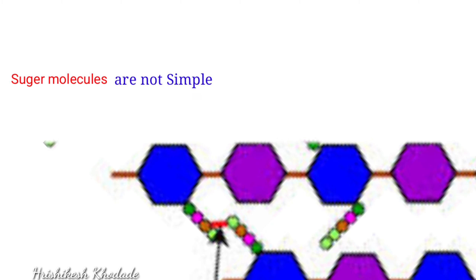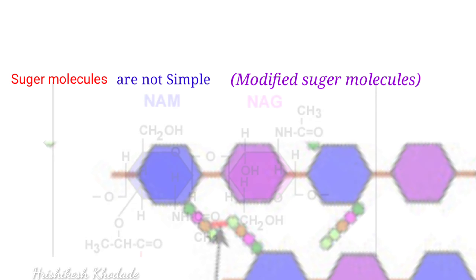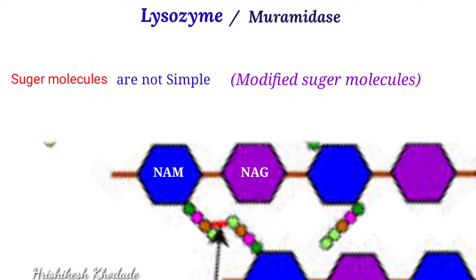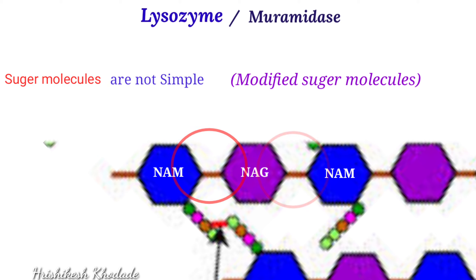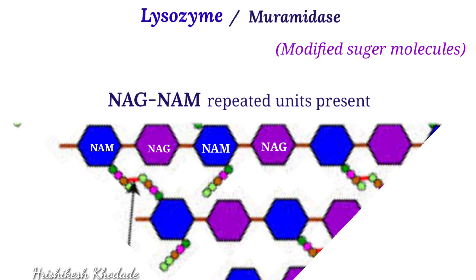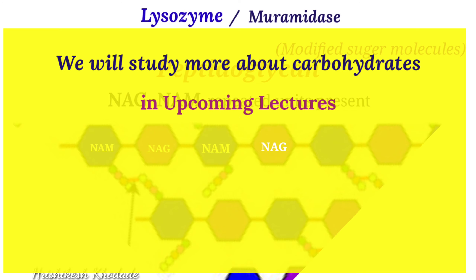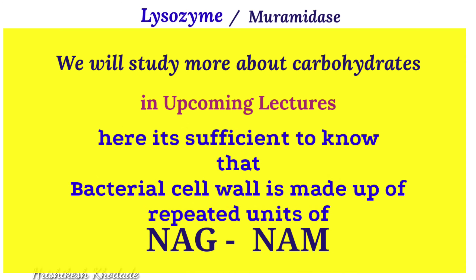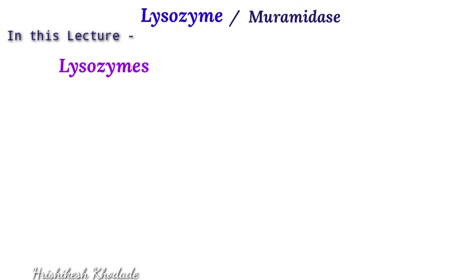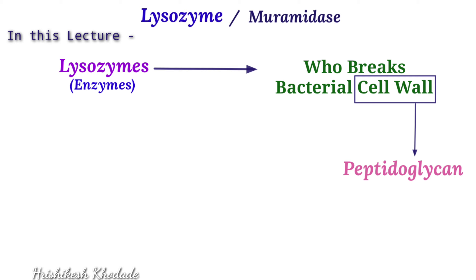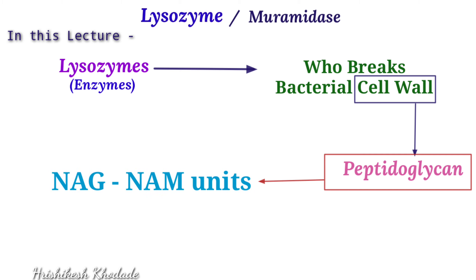The sugar molecules are not simple; instead they are modified sugar molecules named NAG and NAM, which are interconnected by glycosidic bonds. NAM is connected to NAG by a glycosidic bond, and so on — NAG, NAM, NAG, NAM are repeated units present in bacterial cell wall peptidoglycan. We will study structural differences of NAG and NAM in the upcoming carbohydrate section. Here it is sufficient to note that peptidoglycan is made up of NAG and NAM repeated units interconnected by glycosidic bonds.